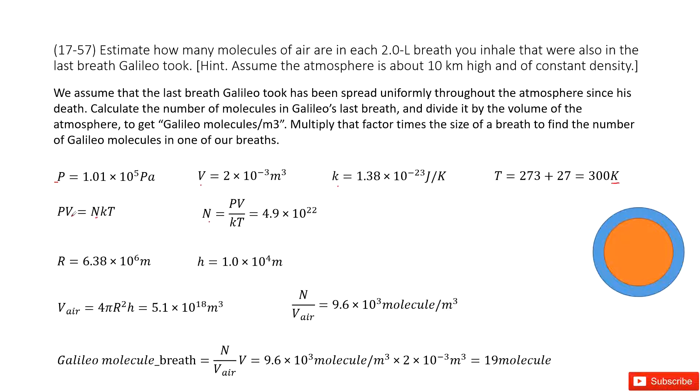Now we can have the ideal gas equation, PV equal to NkT. So we find the molecules, the number of molecules in Galileo's last breath equal to PV divided by kT. Input known quantity, get answer there. And this is the number of the molecules.